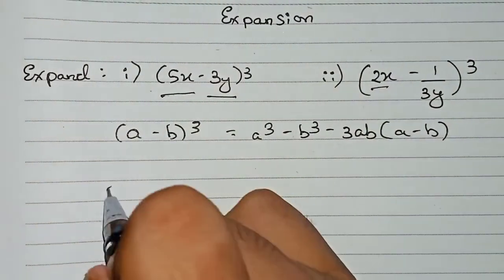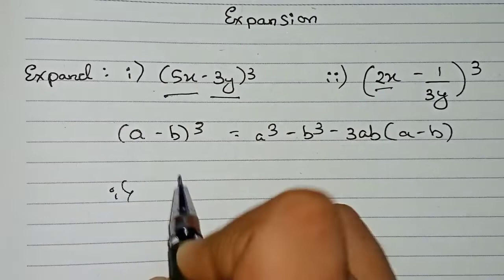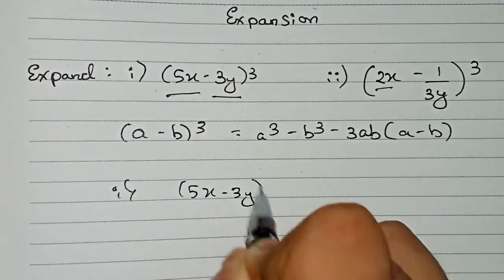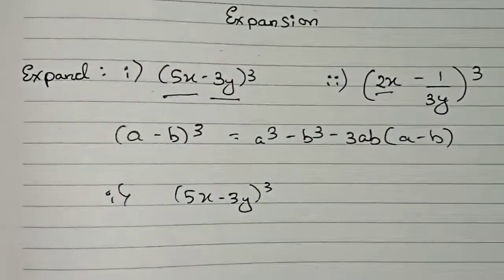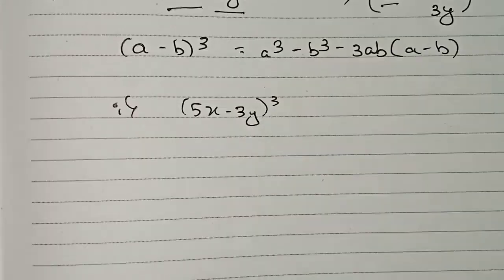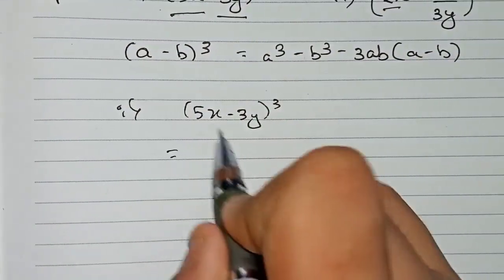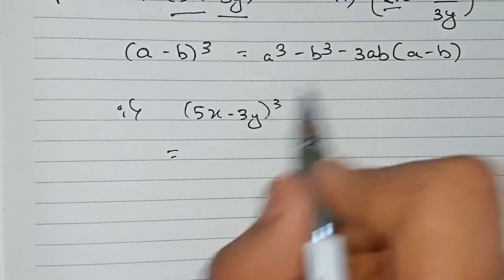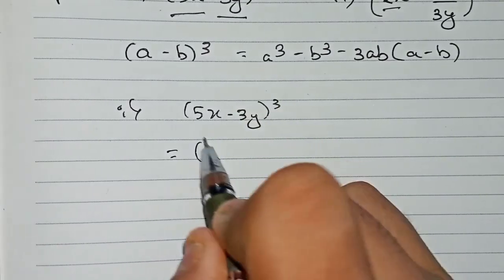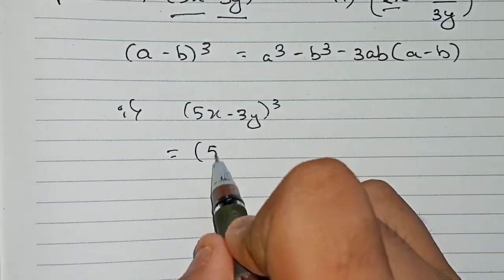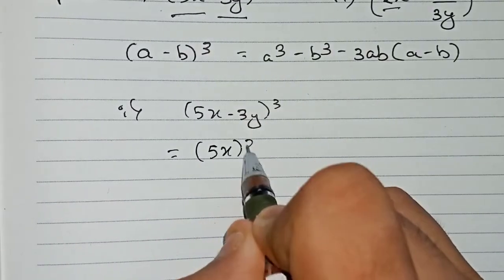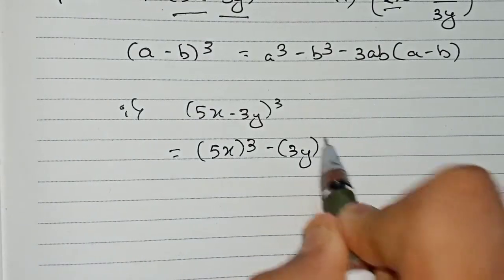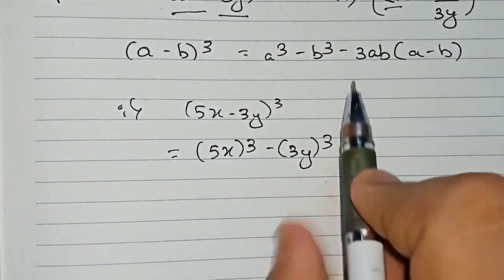Proceeding with question one: 5x minus 3y whole cube. According to the formula, we put down the values with a = 5x and b = 3y. So first, a cube gives us 5x cube. Then minus b cube gives minus 3y cube. Then minus 3 into a into b.